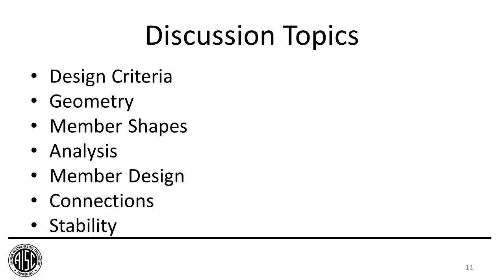First we're going to establish design criteria that affect the design of long-span structures. We're going to talk about the geometry of trusses, move on to member shape selection, discuss analysis of trusses, discuss member design, discuss truss connections, and finally talk about stability. Afterward I'll provide a design example.